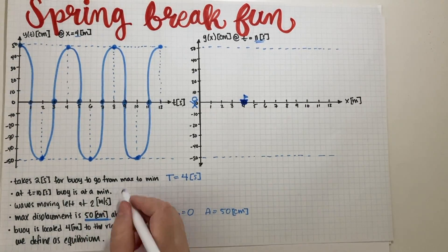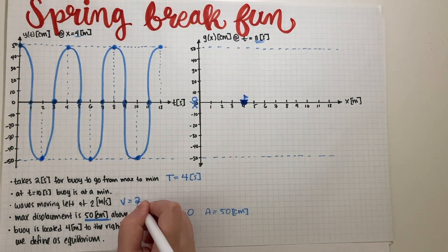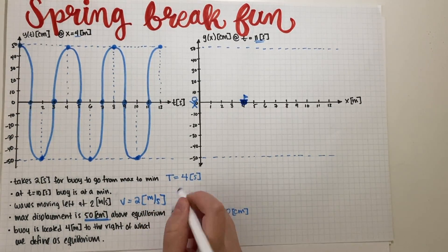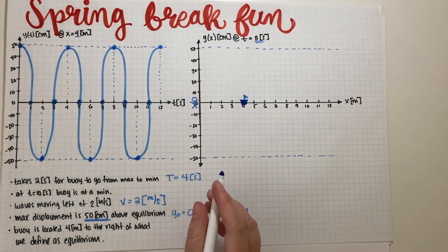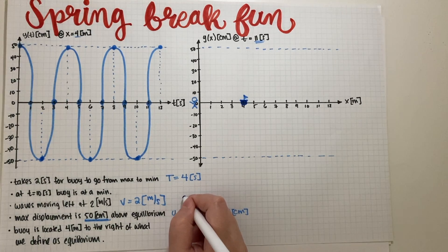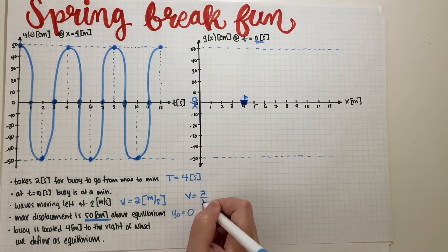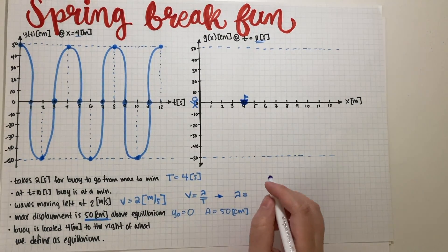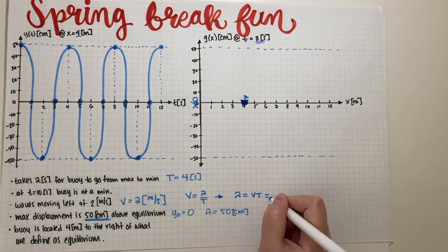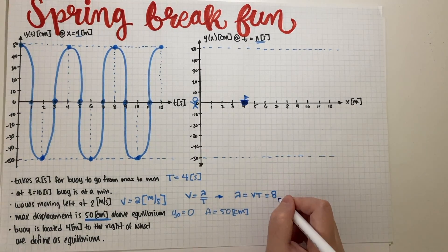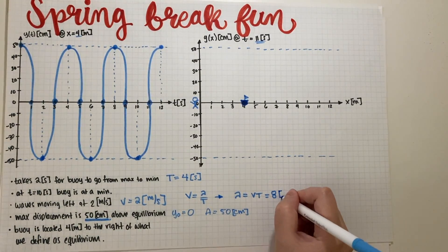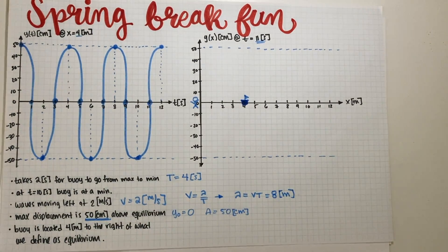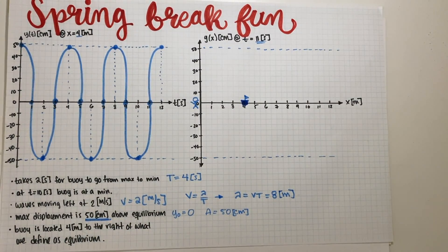Now we need to find the wavelength λ. We have a wave speed v = 2 m/s and period T = 4 s. Using the relation v = λ/T, we get λ = vT = 2 × 4 = 8 meters.